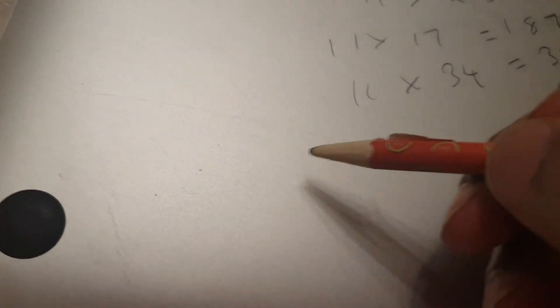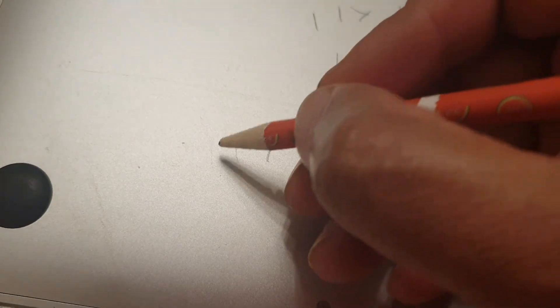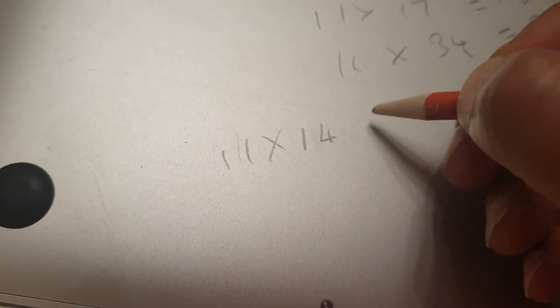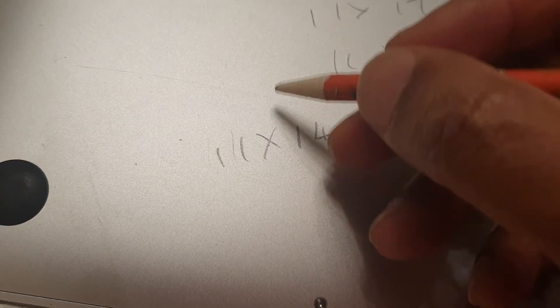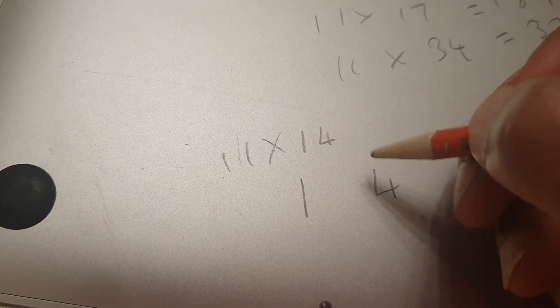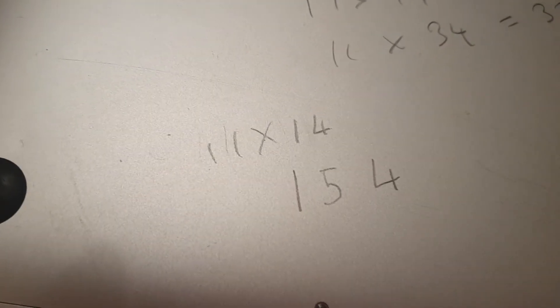So you can pick any number. You can try this at home. 11 times... whoops, we're running out of pencil here. 11 times, let's say 14. So let's work it out ourselves. You get the 1 and the 4, add them together and you get the 5. That's your answer, 154.